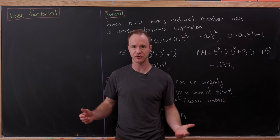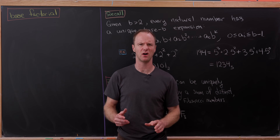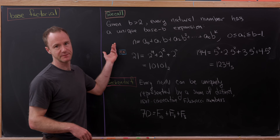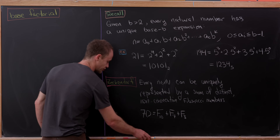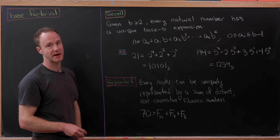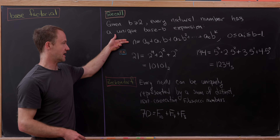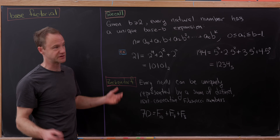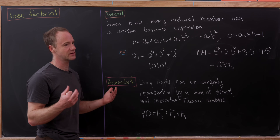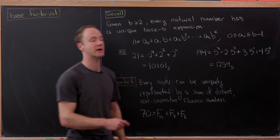Today I want to talk about the idea of representing a natural number in base factorial. But before we even talk about what that means, let's recall what it means to represent natural numbers in base B. So if we've got a natural number B which is bigger than or equal to 2, every natural number has a unique expansion with respect to this base. That expansion is N equals A-naught plus A1 times B to the first power plus A2 times B squared, all the way up to AK times B to the K, where the coefficients of the powers of B are all between 0 and B minus 1.